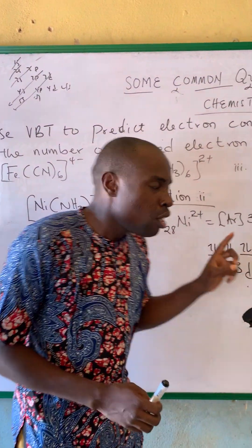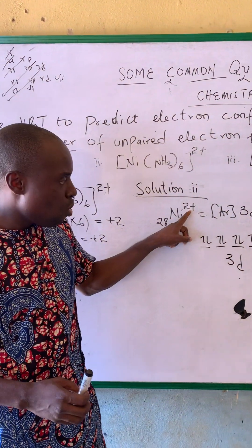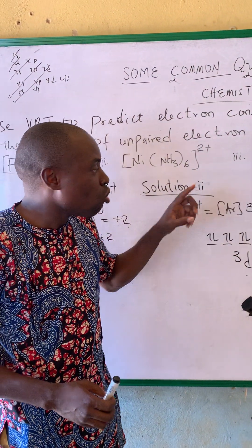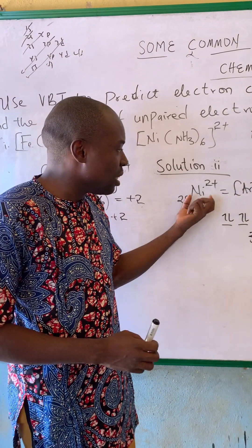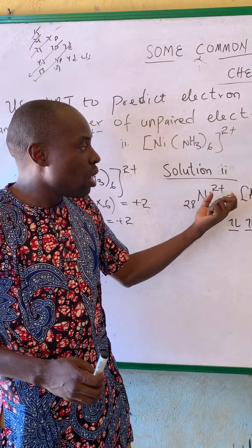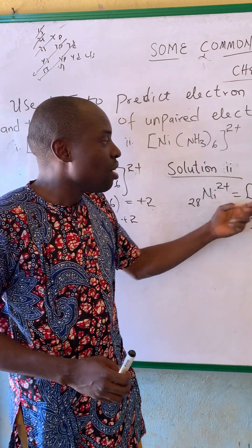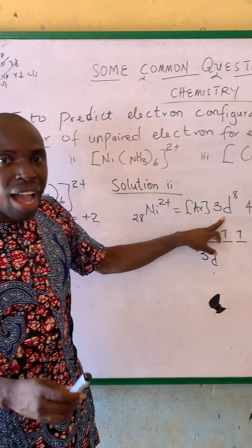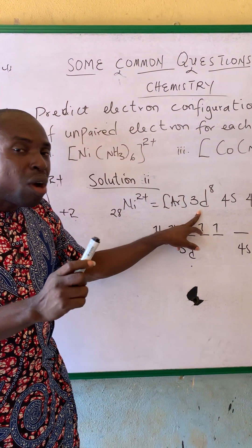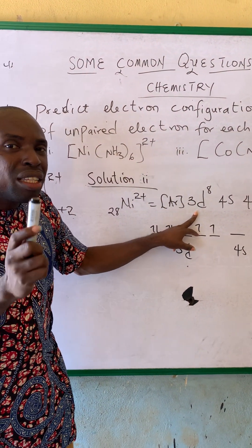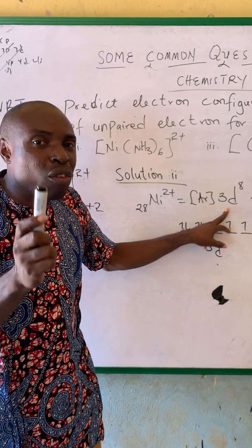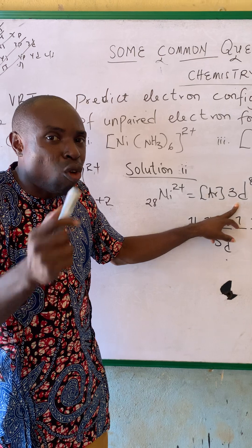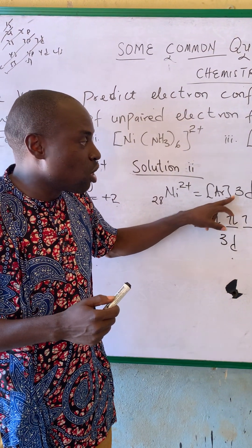Now, knowing that nickel has an atomic number of 28, if it loses 2 electrons — the neutral form of nickel is 4s²3d⁸. I already explained in our previous video how the loss of 2 electrons comes from the 4s.